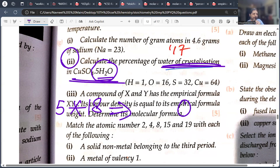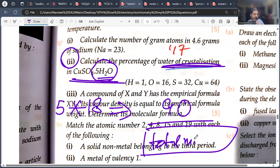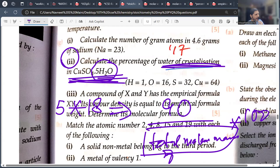If we do 16 plus 2, it will be 18. So this 5H2O means 5 into 18 is 90. 90 upon total molar mass of CuSO4 5H2O into 100. This one has already been interrupted. This left a doubt.